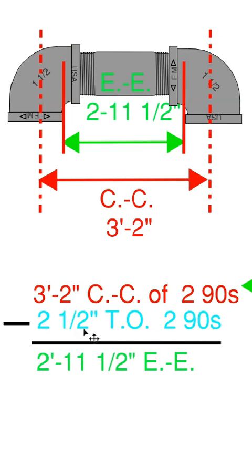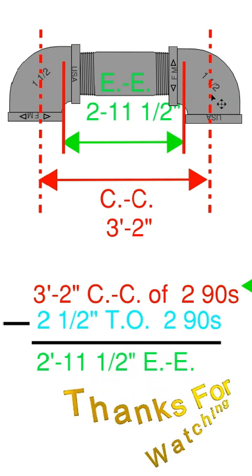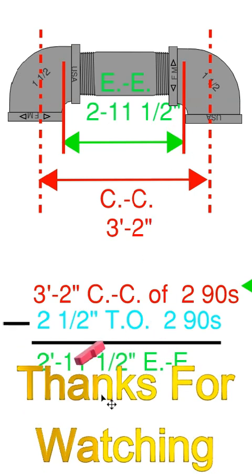So if we take the two and a half inches off the three foot two, it gives us two foot eleven and a half. That would be your end to end piece. Two foot eleven and a half with two nineties on it will give you three foot two.